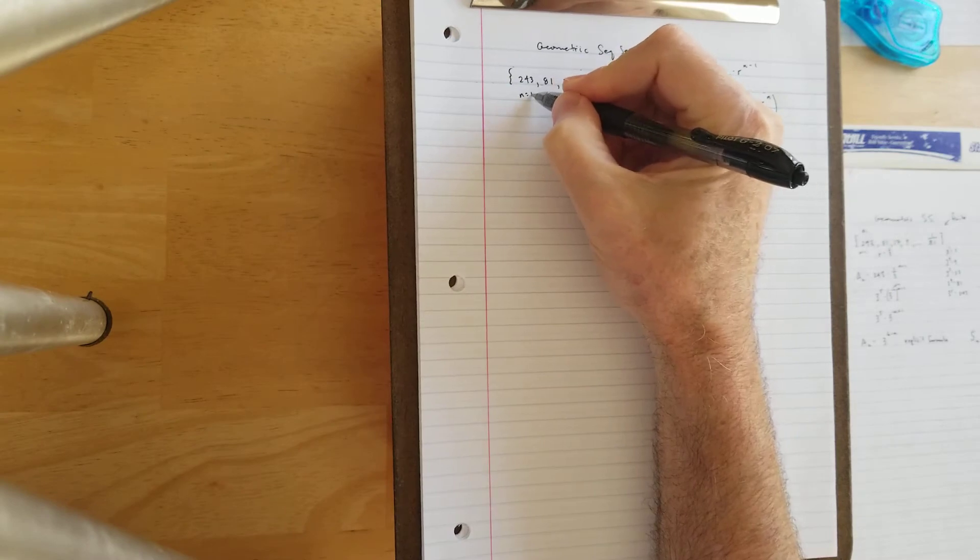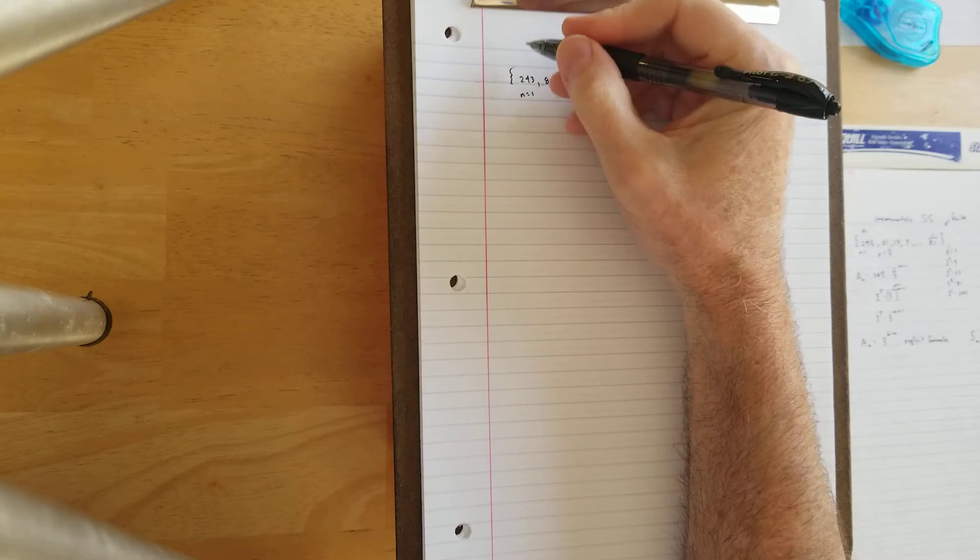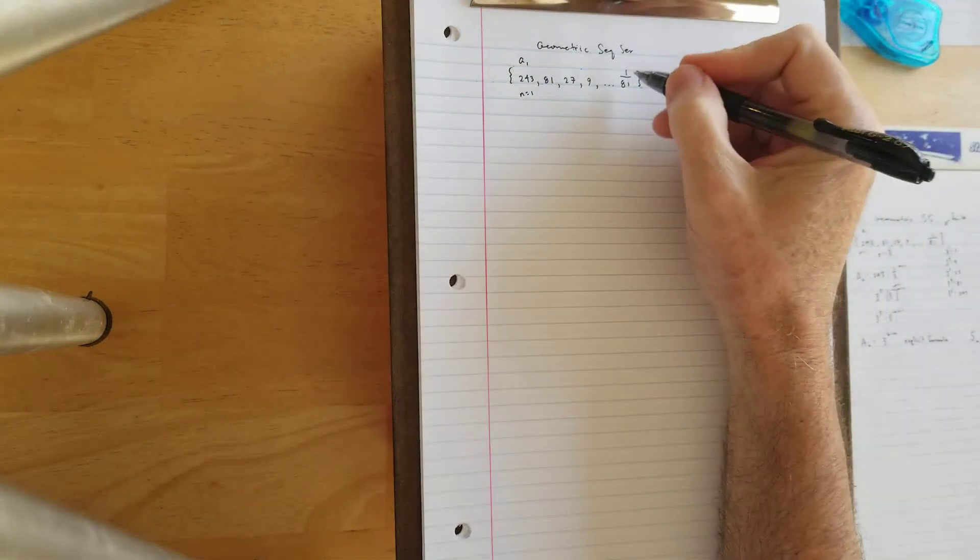This is my n equals 1 term for the subscript of the summation that makes this a sub 1. But we don't know which term of the sequence this is. We'll calculate that in just a moment.